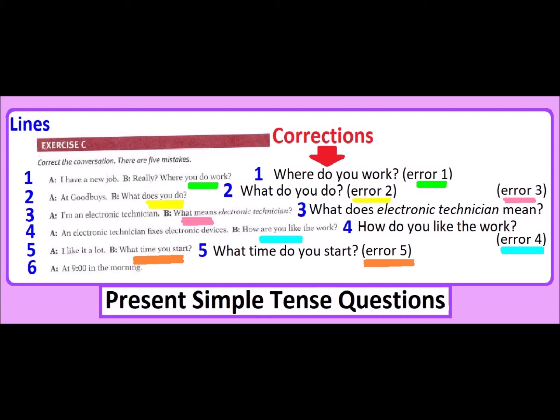So here we have in the first line, I'm going to explain the nature of those mistakes which you didn't notice or didn't know how to correct. In the first line we have the question 'Where do you work?' The nature of this mistake was that the auxiliary helping verb DO is missing.